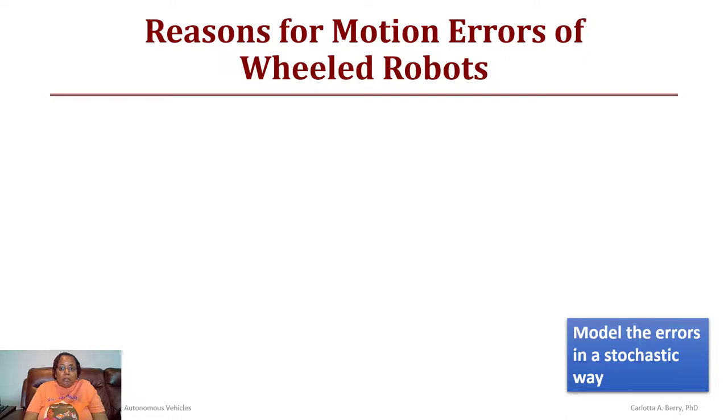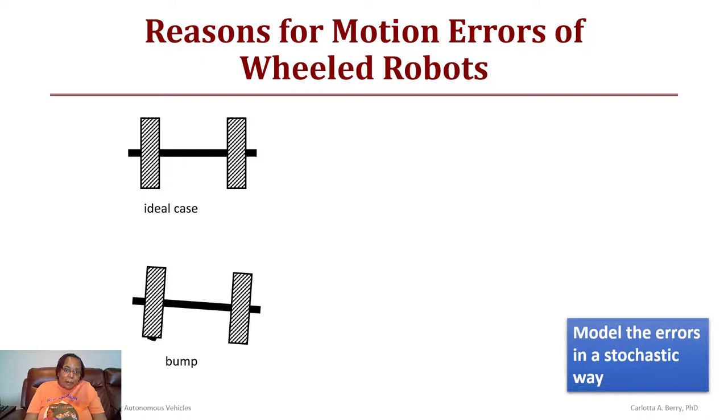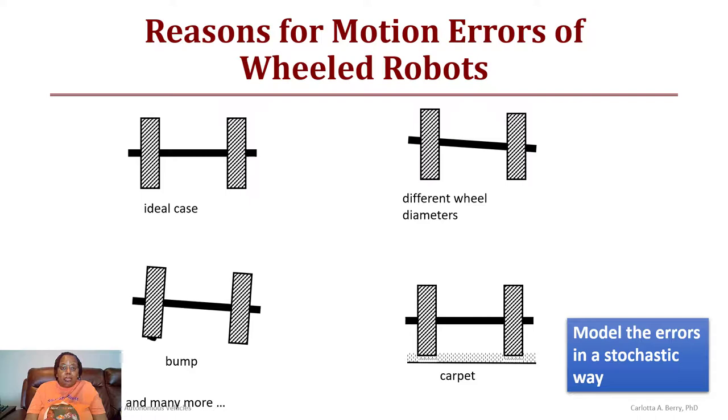What are some of the reasons for error in wheeled mobile robots? We've discussed these before. The ideal case is the motors are ideally matched, the diameter of the wheels is exactly the same, they have the same motor power, the surface is completely level and even. But more likely the surface is going to be bumpy, there's going to be different wheel diameters, the motors are going to have different power, or the robot may be on carpet and when robot turns on carpet it may slide left and right or it may drift when it goes over bumpy surfaces. What you really want to be able to do is have a stochastic way of modeling these errors to help you to estimate your robot's location even when you are confronted with these types of issues.